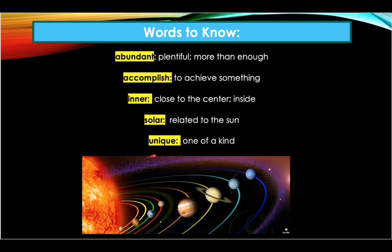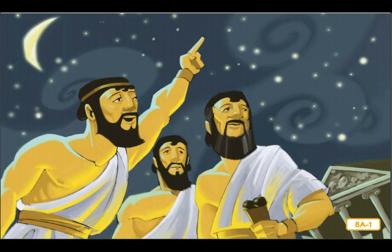Our last word to listen for in the story is unique. Unique means one of a kind. An example: each person in the world is different from every other person, so we say that each person is unique. Our next two lessons are going to teach us about several planets. We have learned that a planet is different from a star.